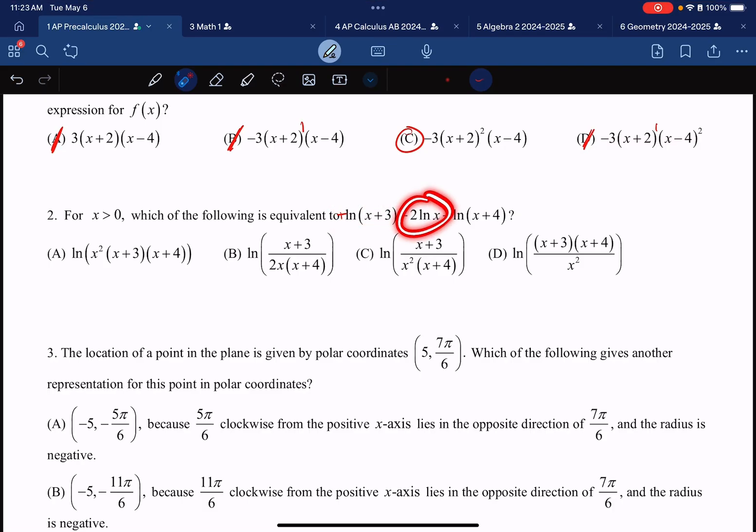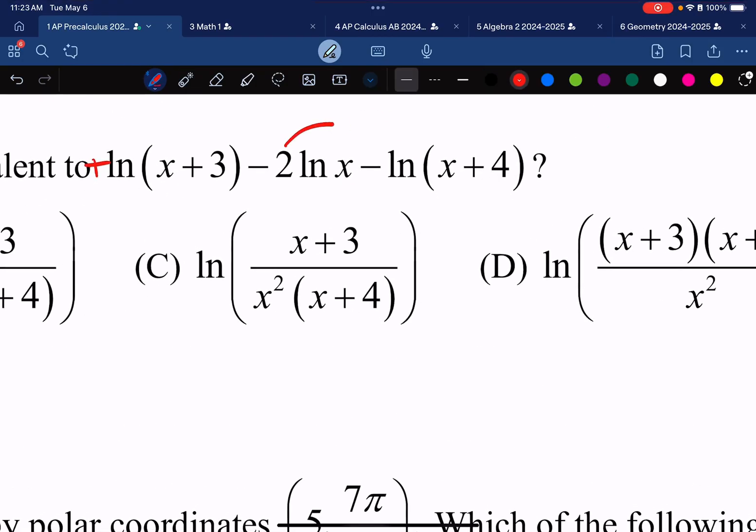This second term is a little bit funky because I have an interesting number in front of it. This coefficient is going to be brought up here to a power to become x squared, and I'm going to use whiteout and remove the 2.